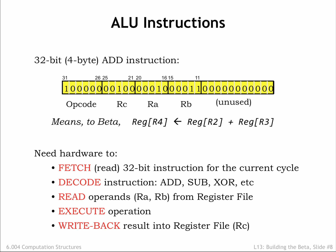Since one instruction is executed each clock cycle, the frequency of the clock tells us the rate at which instructions are executed. If the clock period is 10 ns, the clock frequency would be 100 MHz, and our beta would be executing instructions at 100 MIPS.